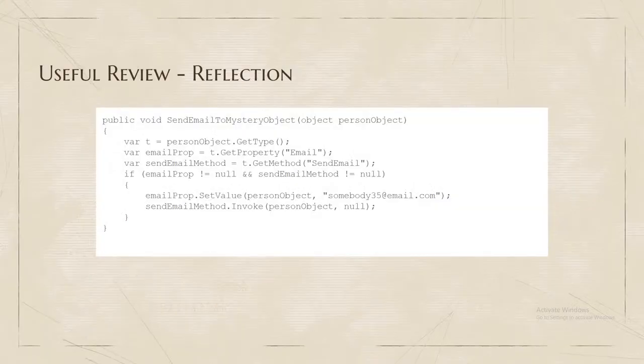For those who haven't used reflection, this is the code it takes just to call a method with two parameters you got off the same object's properties. It's a contrived example — you'd probably never need to do that — but just to call a method with two properties from a person object whose type is not necessarily known, it's quite a bit of code, kind of ugly, hard to read, more than kind of hard to maintain, not type-safe and prone to bugs, and a little bit slow for lots and lots of operations. But this is what it looks like.